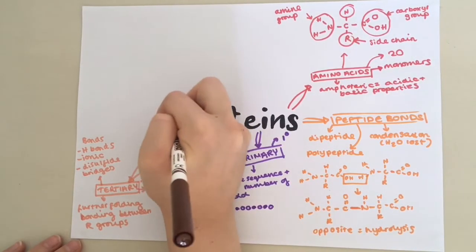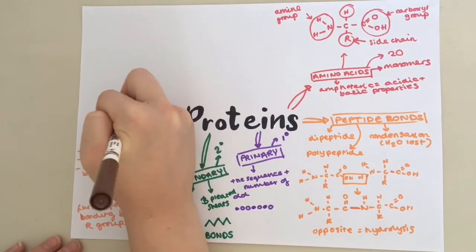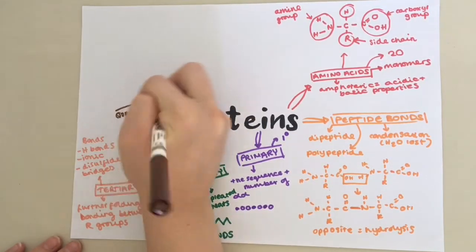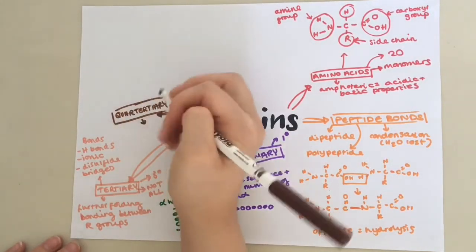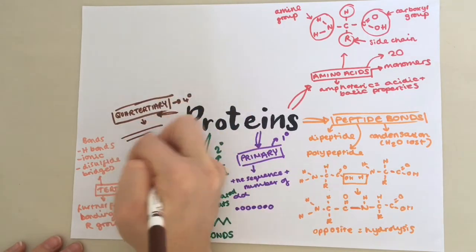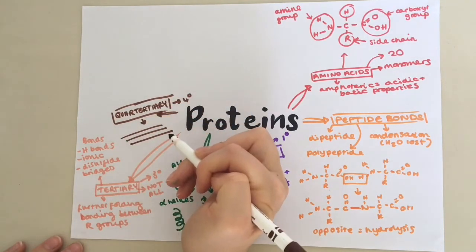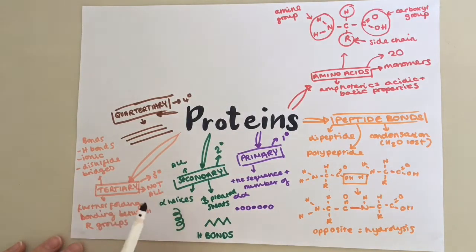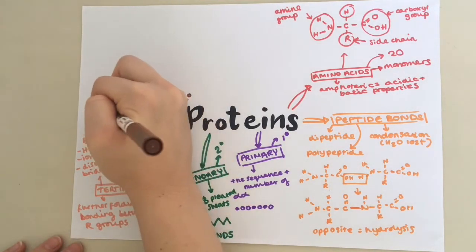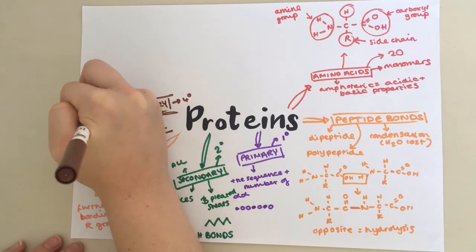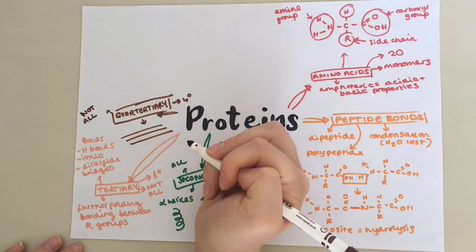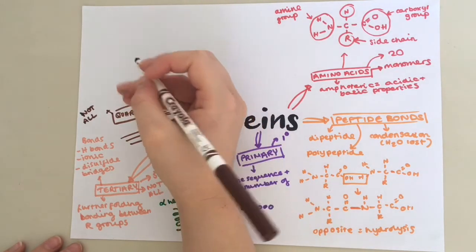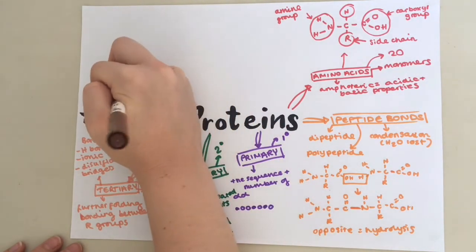Now we have quaternary structure. This is basically where several different poly-peptide chains are held together by bonds. The bonds are similar to these ones in tertiary structure. Not all proteins will have quaternary structure. An example of a protein with quaternary structure is haemoglobin.